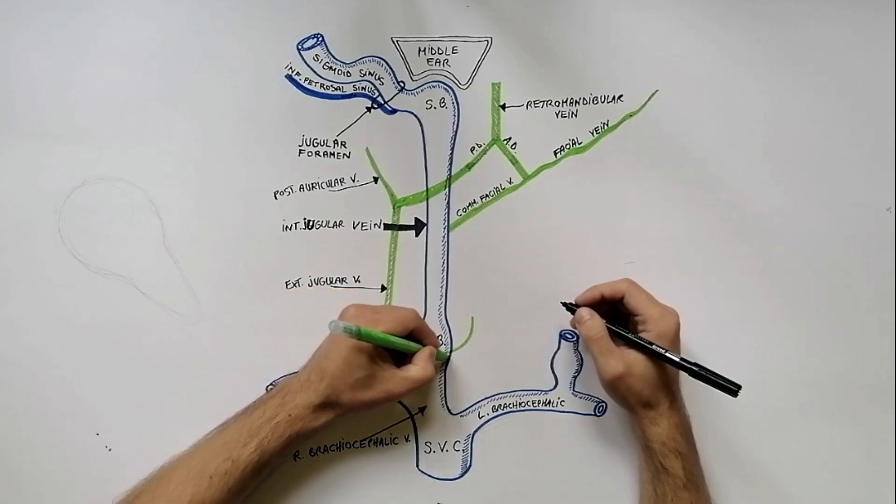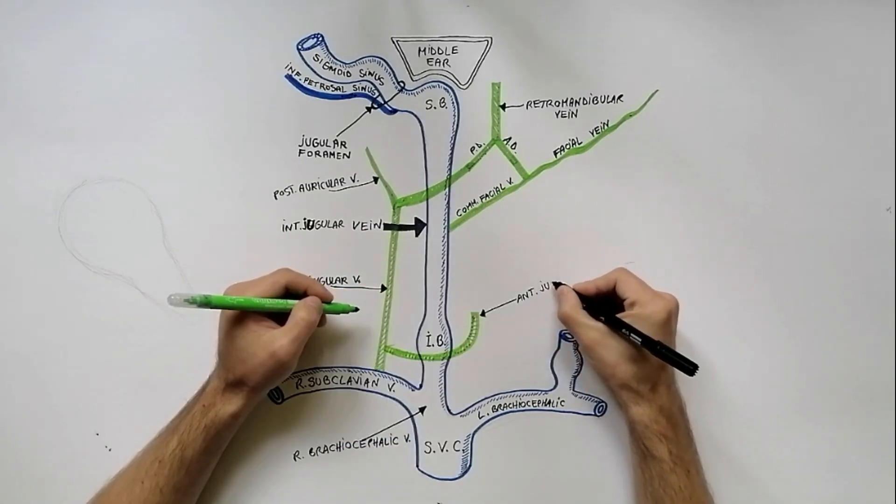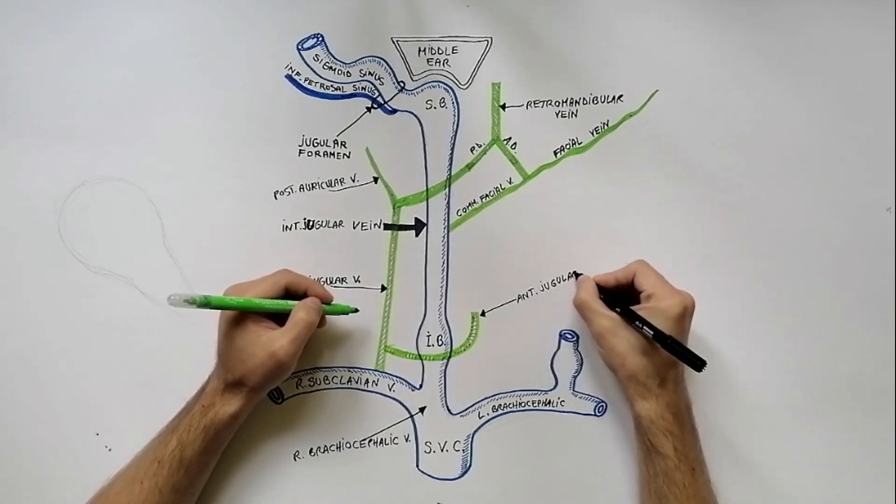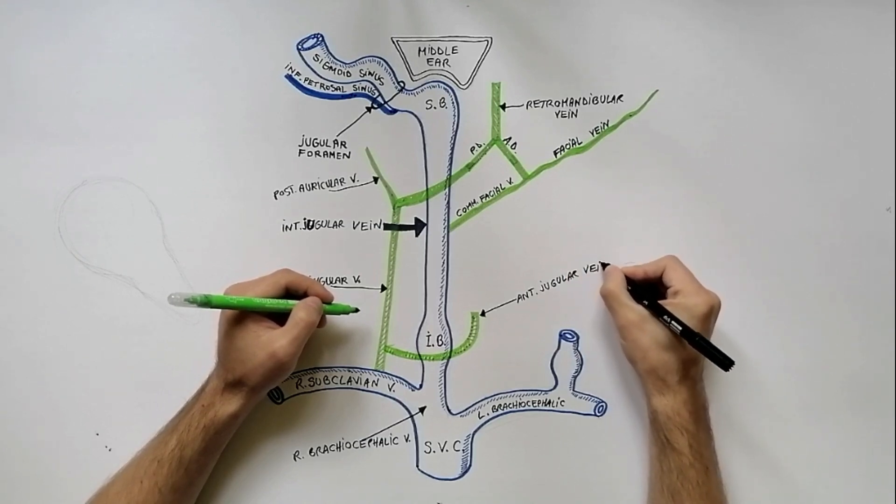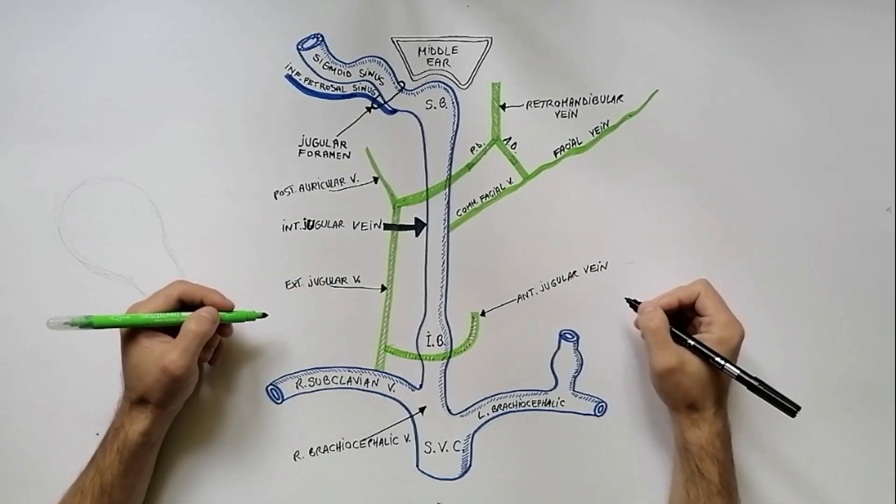The anterior jugular vein crosses anteriorly the inferior part of the internal jugular vein and terminates in the external jugular vein.